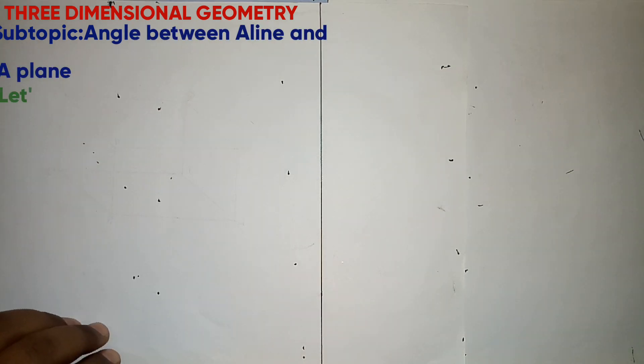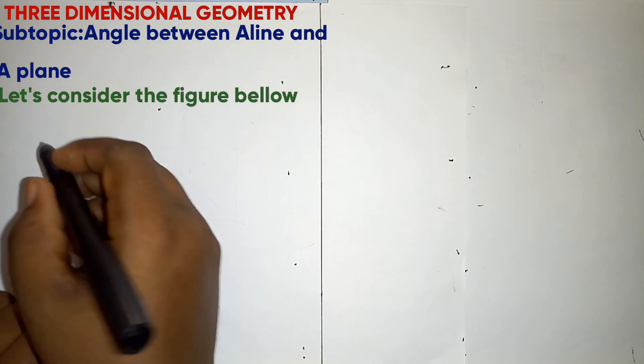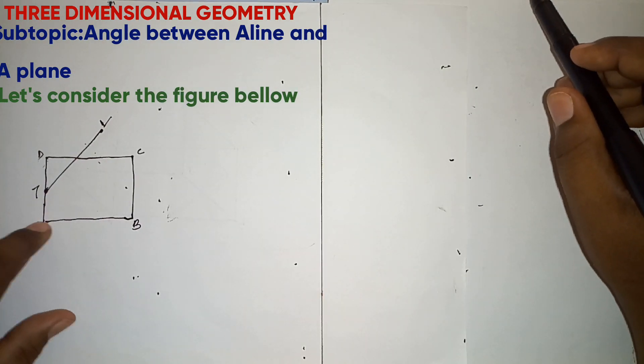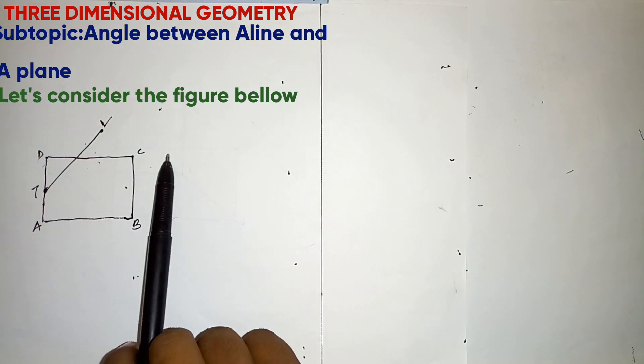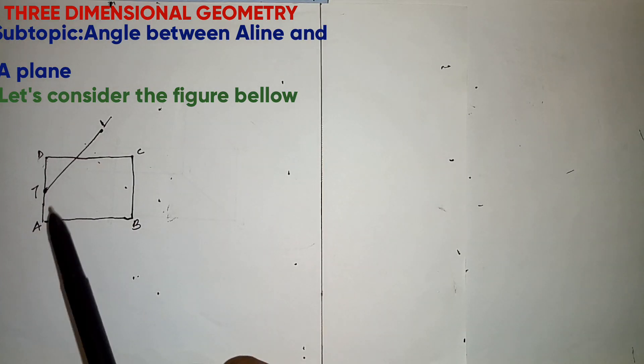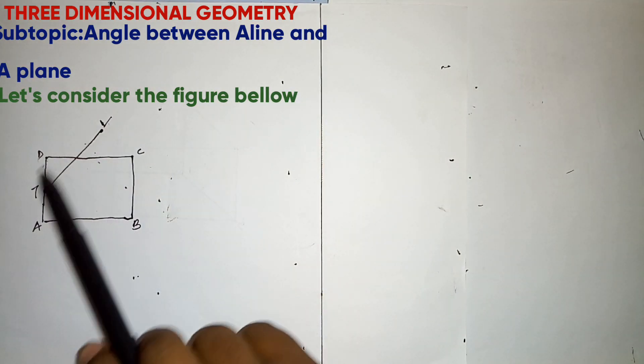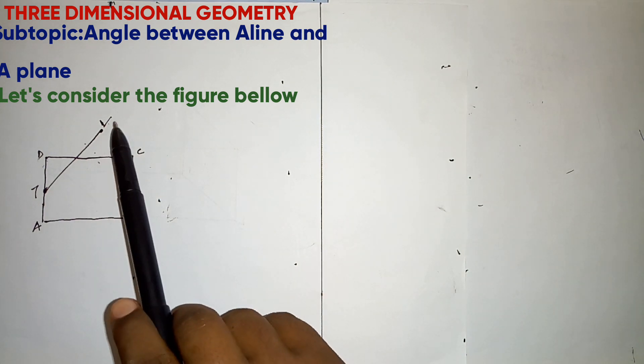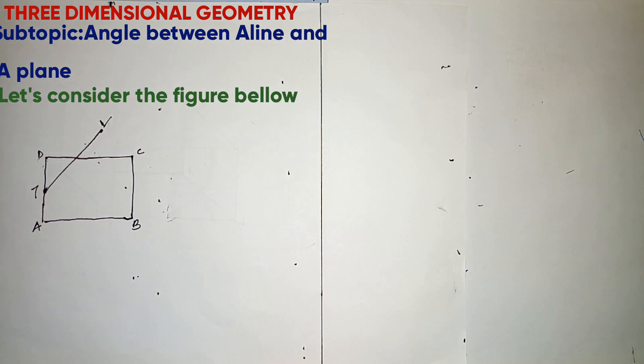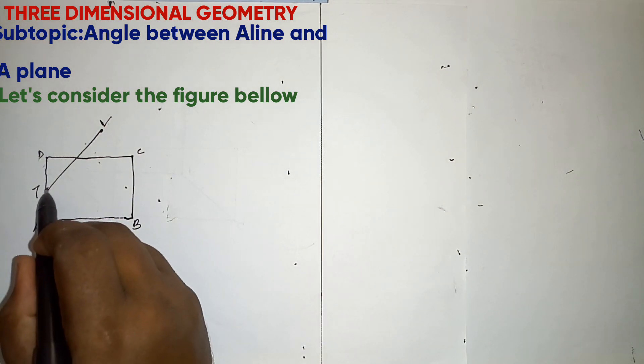Let's consider the figure below. So here we have the base A, B, C and D. And then we have the line VT. So the line VT and the plane ABCD intersect at point T.